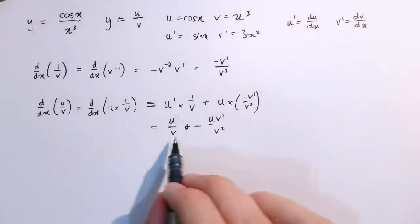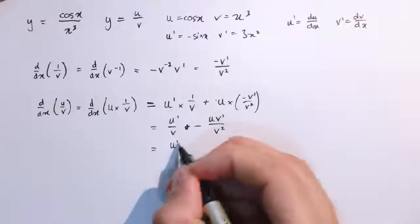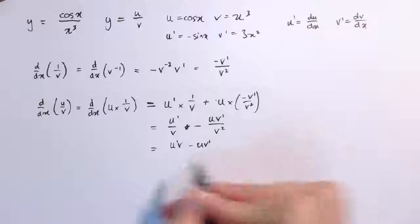And then putting these over a common denominator of v squared, I just need to multiply this one top and bottom by v, so that would be u dashed v, and this was still u v dashed all over v squared. And that then is exactly the quotient rule.